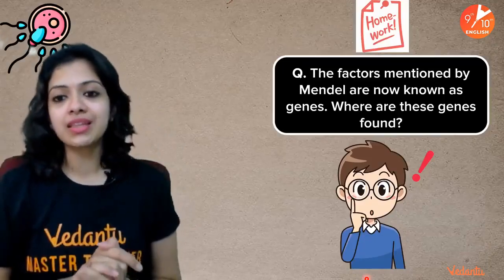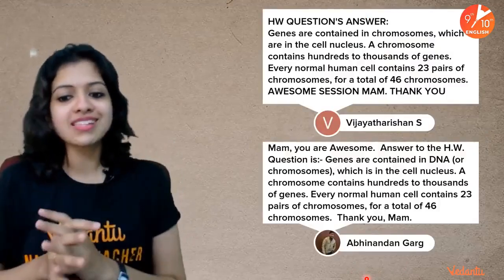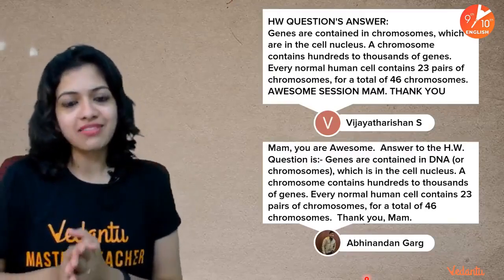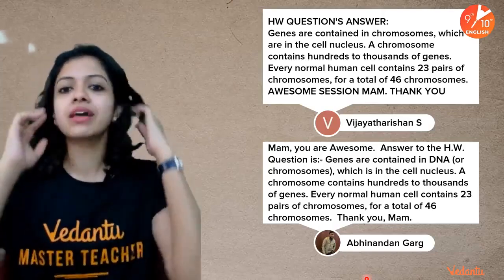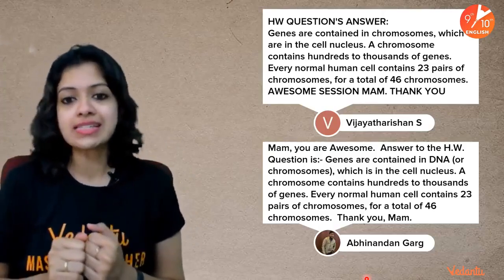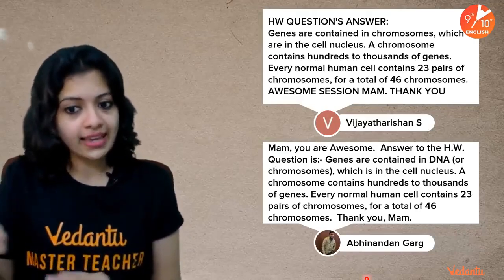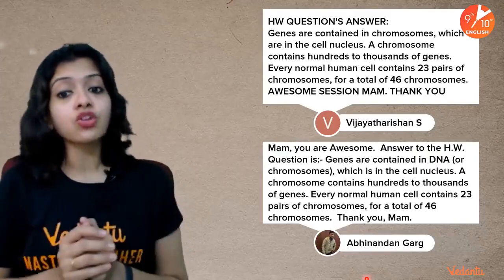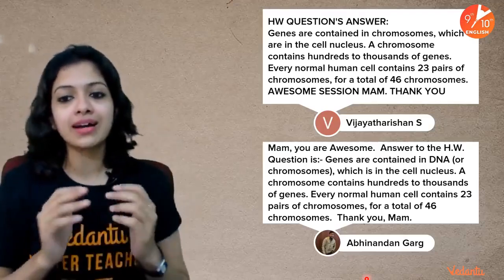Here is my homework question from the last class: the factors mentioned by Mendel are now known as genes — where are these genes found? I received full answers from two children, Abhinandan and Vijay Tarishan. Both answers are similar and complete. Genes are contained in chromosomes which are in the cell's nucleus. Abhinandan added that they are contained in DNA found in chromosomes in the cell's nucleus. A chromosome contains hundreds to thousands of genes, and every normal human cell contains 23 pairs of chromosomes, making a total of 46 chromosomes.